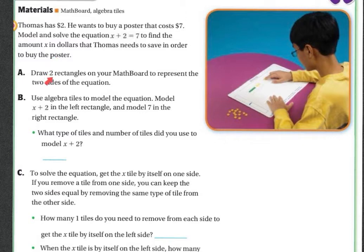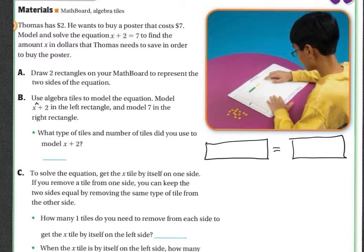First we're going to draw two rectangles on our math board to represent the two sides of the equation. Then we're going to use the algebra tiles to model the equation. Model X plus 2 in the left rectangle, and then model 7 in the right.